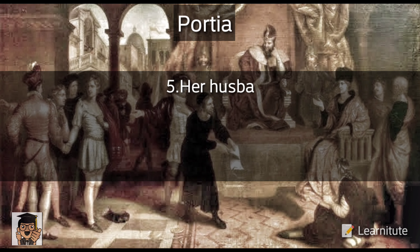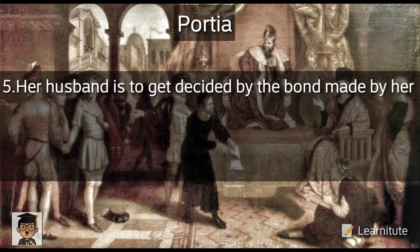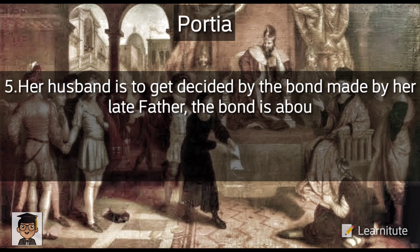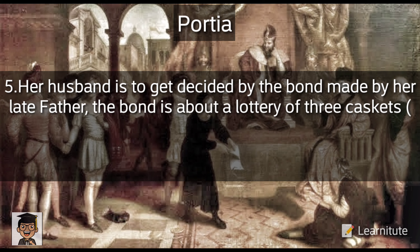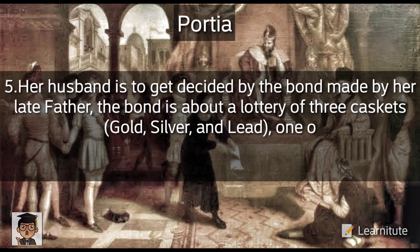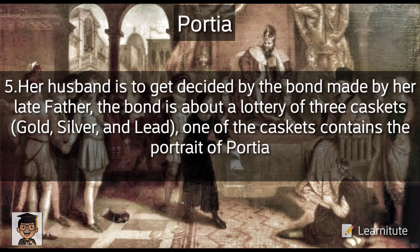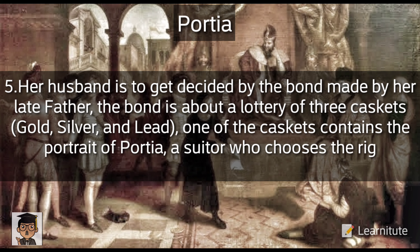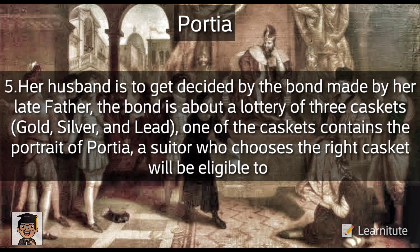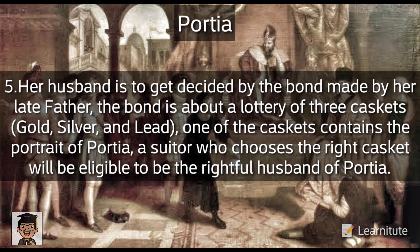Her husband is to be decided by the bond made by her late father. The bond is about a lottery of three caskets — gold, silver, and lead. One of the caskets contains the portrait of Portia. A suitor who chooses the right casket will be eligible to be the rightful husband of Portia.